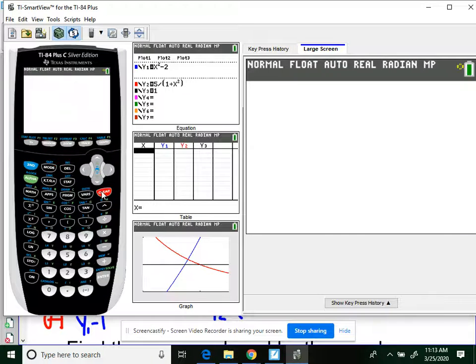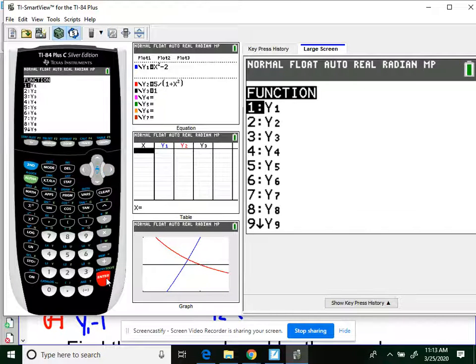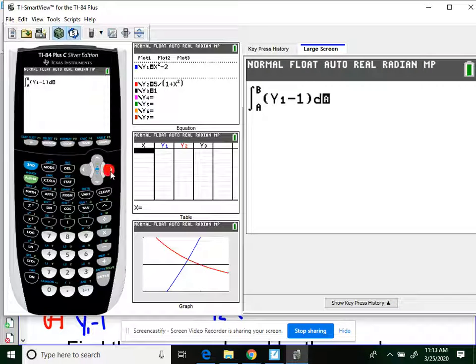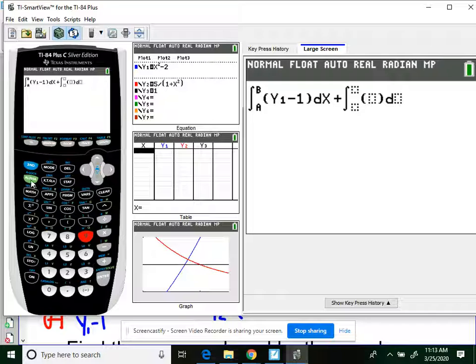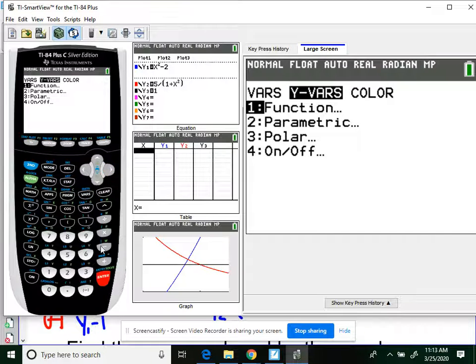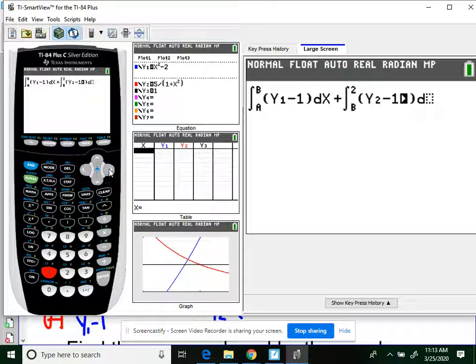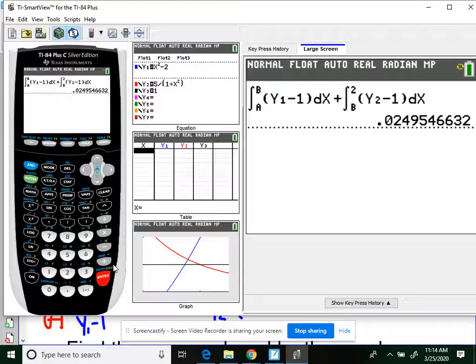Back to the main screen. Math 9. A to B. What was it? A to B y1 minus 1, dx plus math 9, B to 2, y2 minus 1, dx. Enter. 0.0249. I mean, that kind of makes sense. That's a teeny tiny area. So 0.025 is the answer.